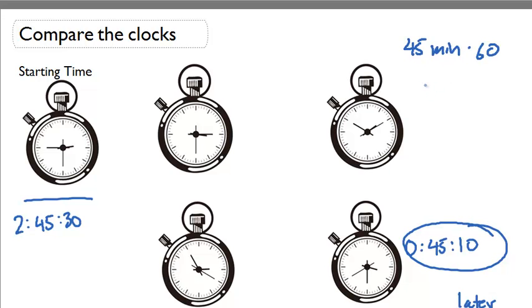And then I'll add 10 seconds to it later. So what is 45 times 60? Well, drop the 0. 6 times 5 is 30. 6 times 4 is 24. So it's 2,700 seconds. And I add 10 to it because I have the 10 left over.